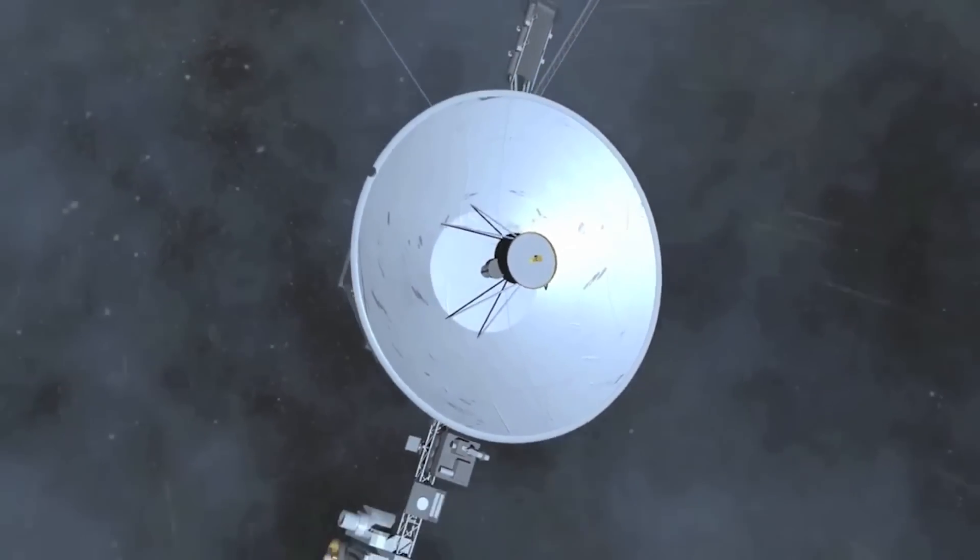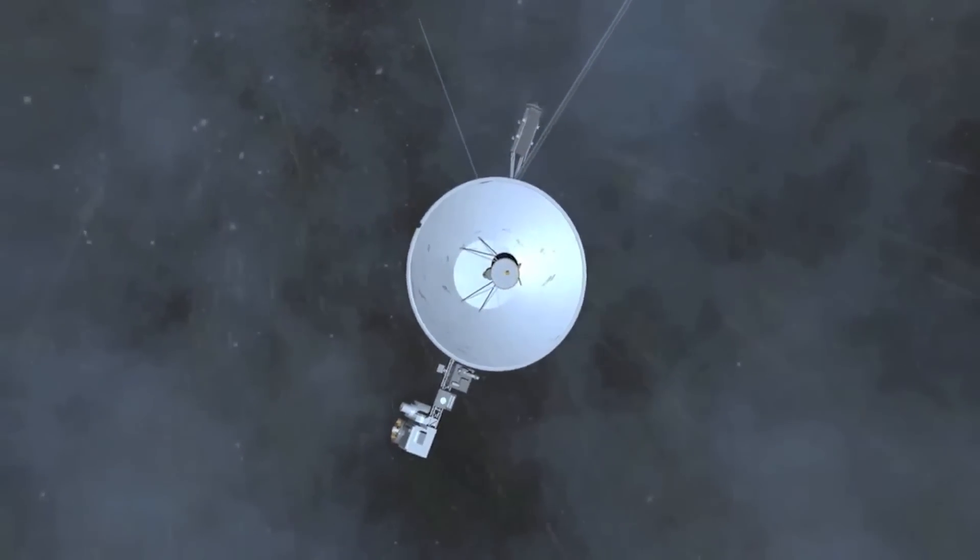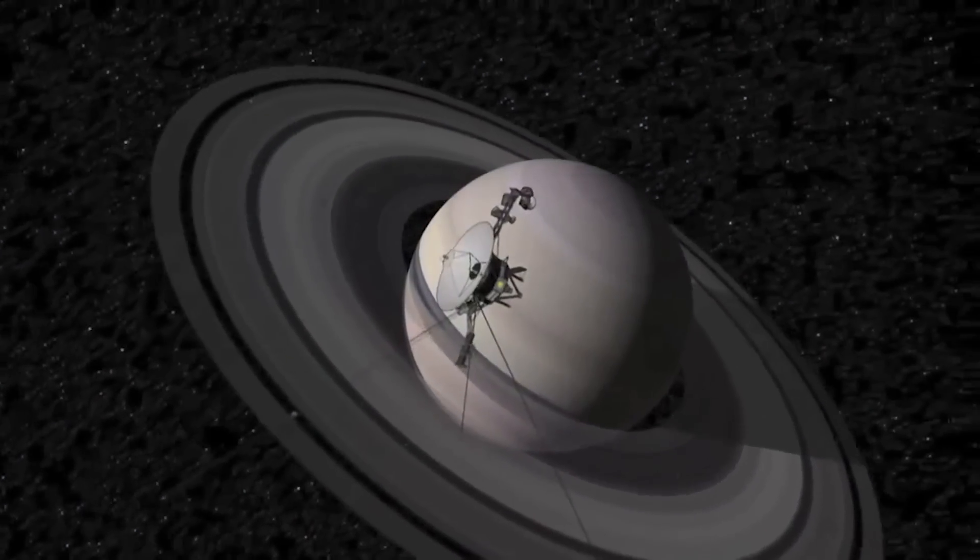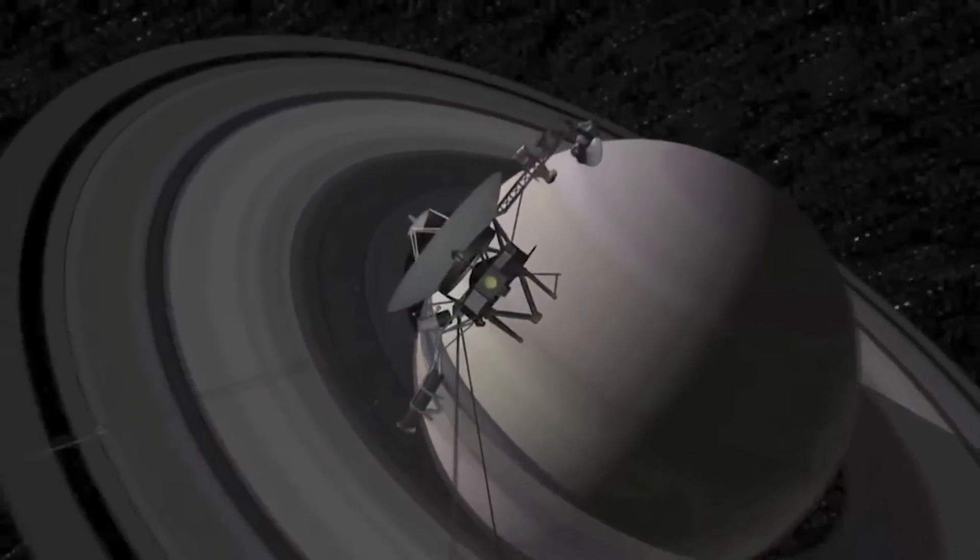But to date, the farthest thing we've sent into space is Voyager 1, which launched in 1977 and is now an astounding 18 billion miles from Earth, which is about .003 light years. So we're halfway there, I think.